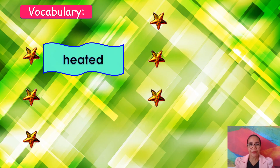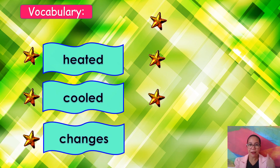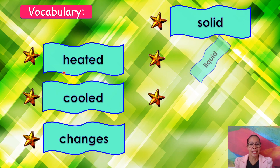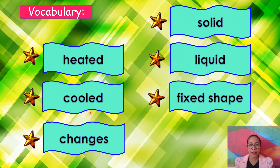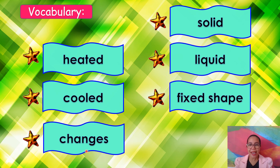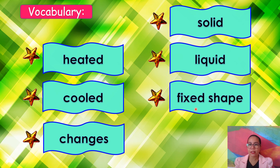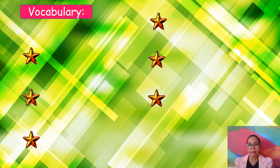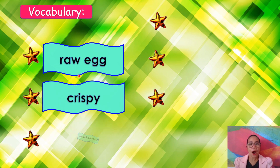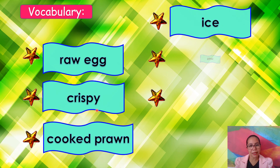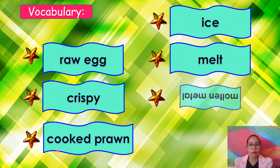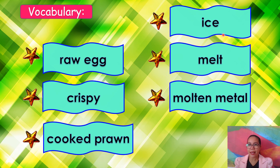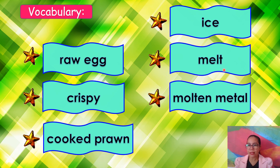For our vocabulary today, you are going to say each word two times: heated, cooled, changes, solid, liquid, fixed shape, raw egg, crispy, cooked prawn, ice, melt, molten metal.